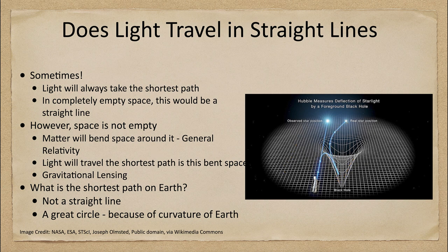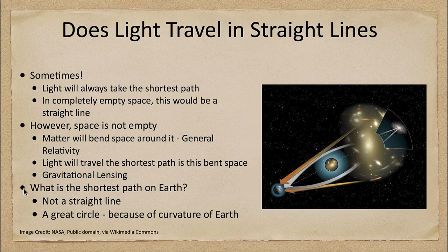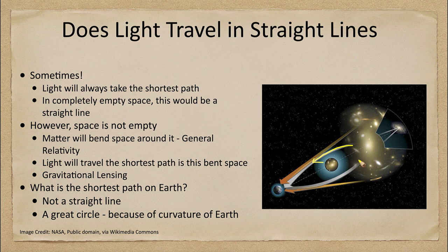Let's take a look at an example of that, where we see a foreground cluster of galaxies in the front. As we look at the more distant objects, those more distant objects' light is bent as it comes around this cluster, and they seem to come from other directions.